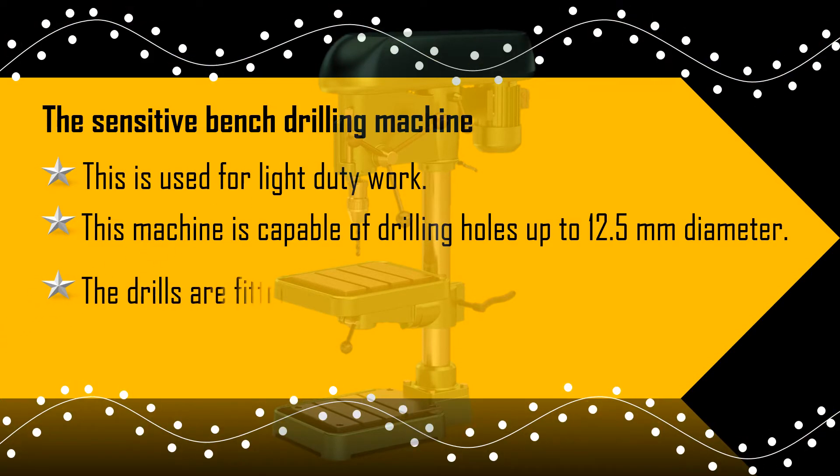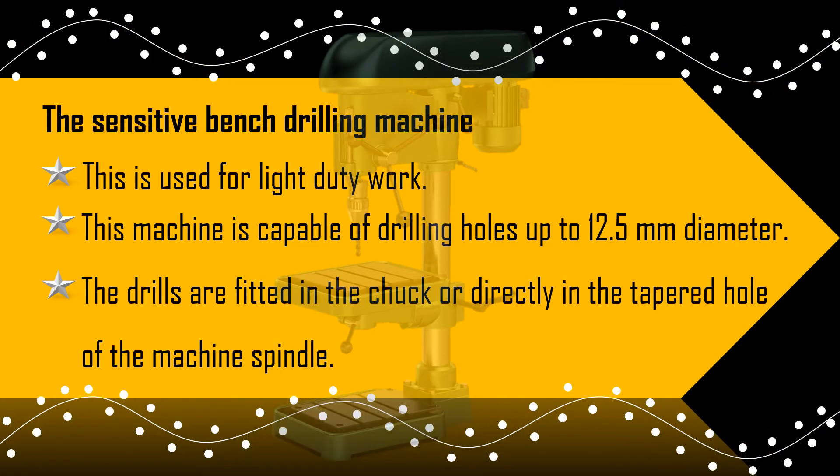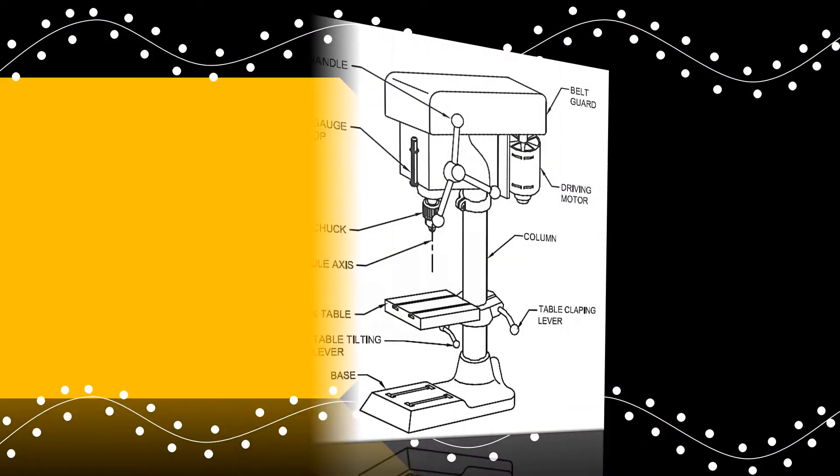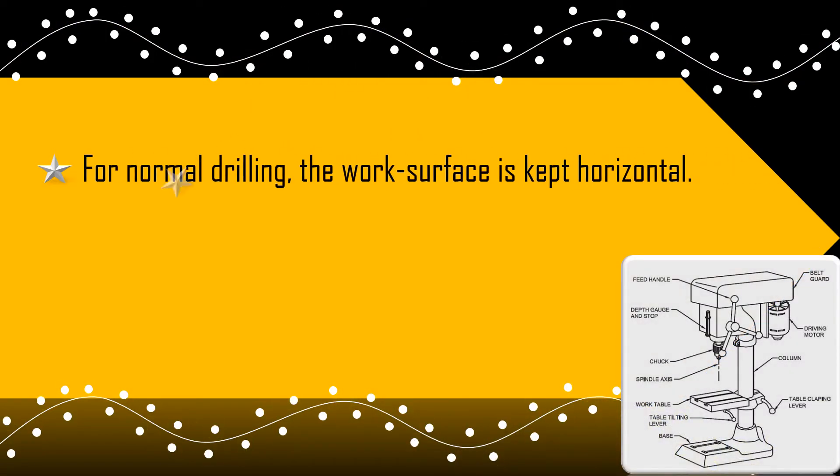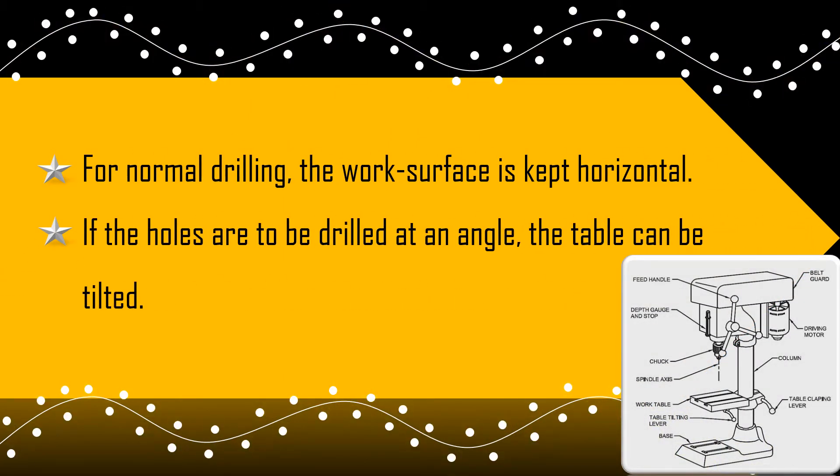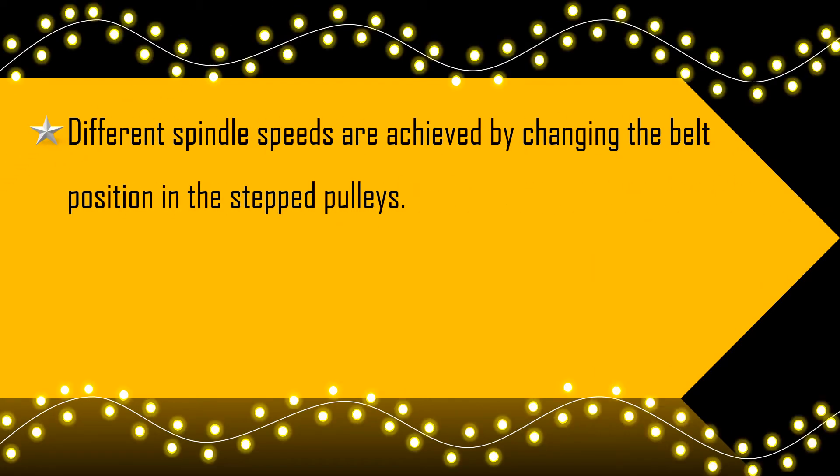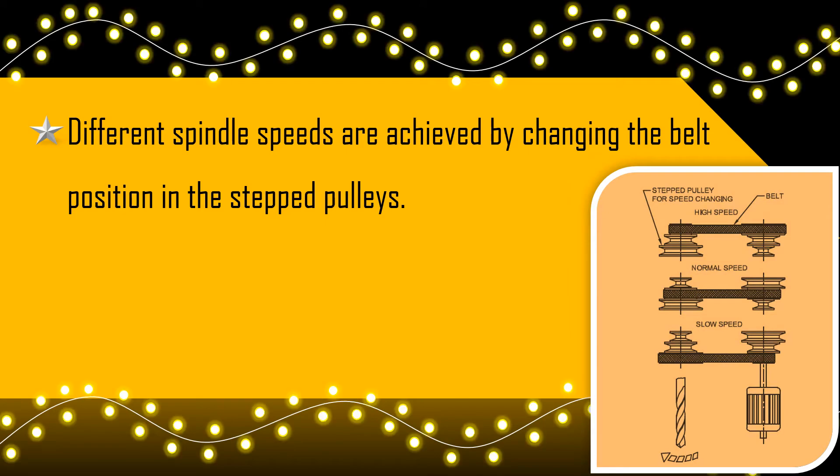The drills are fitted in the chuck or directly in the tapered hole of the machine spindle. For normal drilling, the work surface is kept horizontal. If the holes are to be drilled at an angle, the table can be tilted. Different spindle speeds are achieved by changing the belt position in the stepped pulleys.